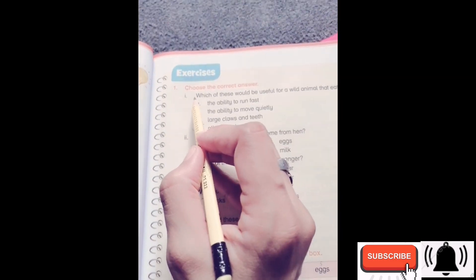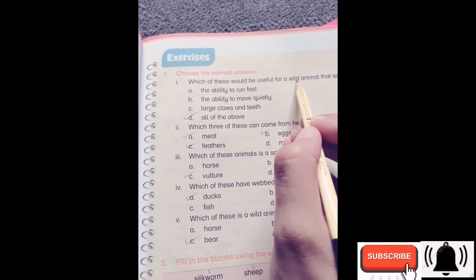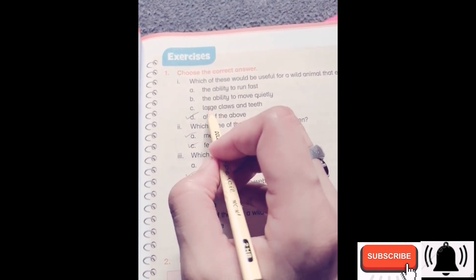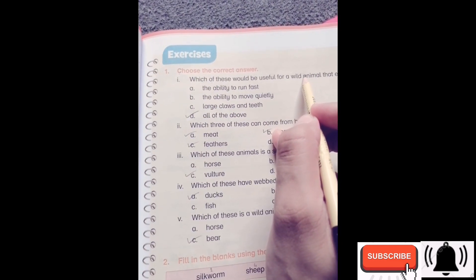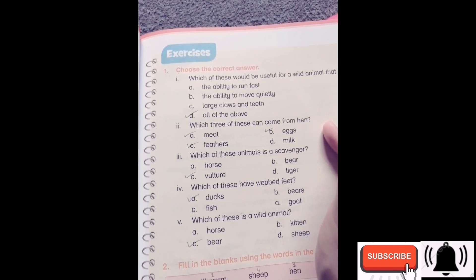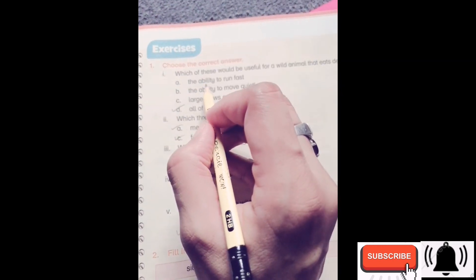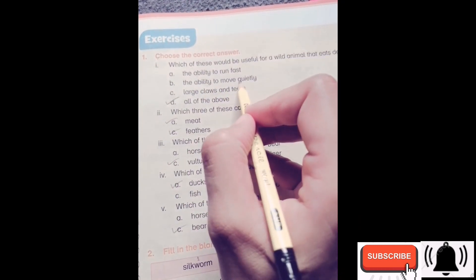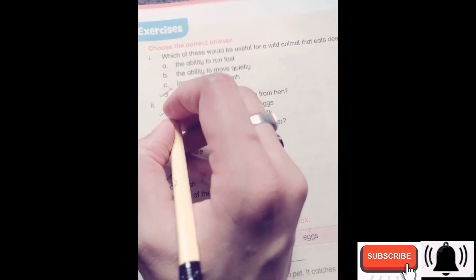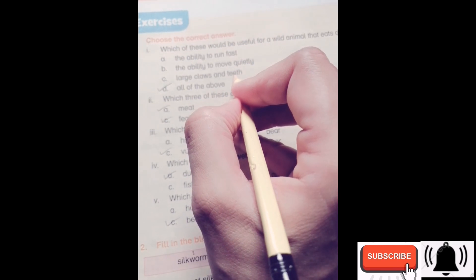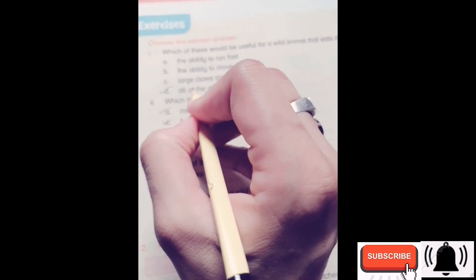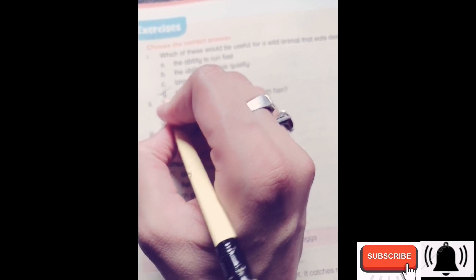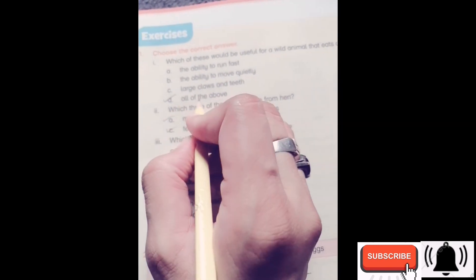Let's start with question number one: choose the correct answer. Number one, which of these would be useful for a wild animal that eats deer? A is the ability to run fast, B the ability to move quietly, C large claws and teeth, and D all of the above. So the correct answer is option D, all of the above.